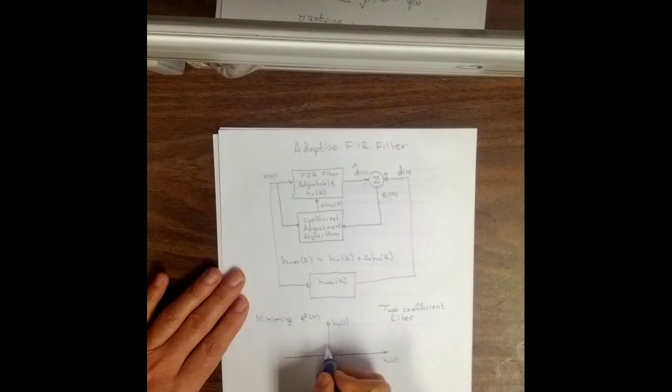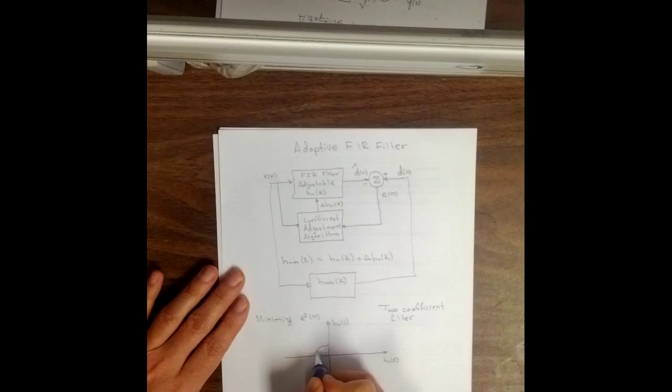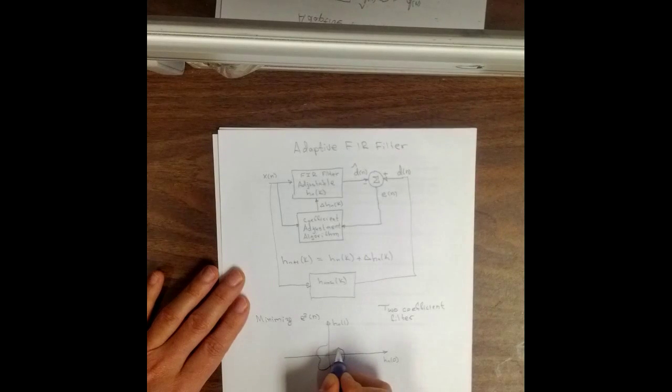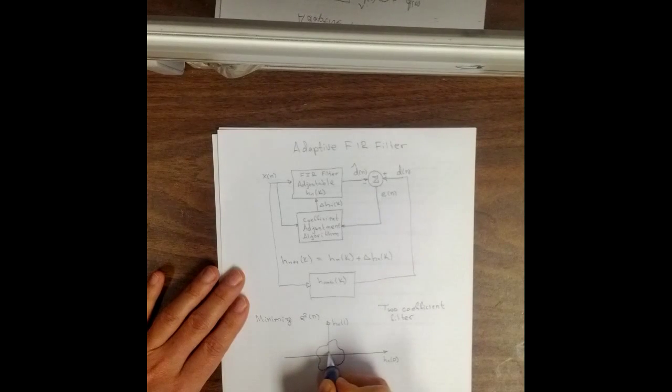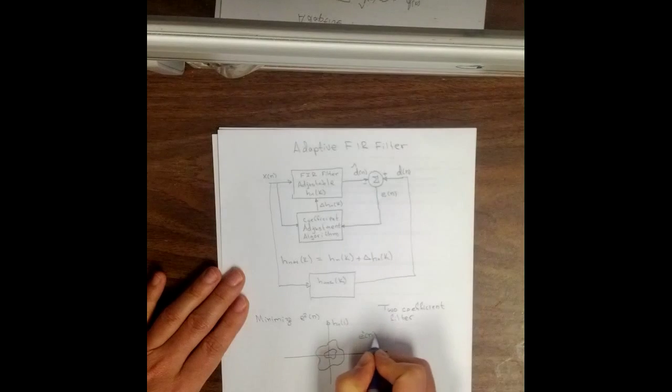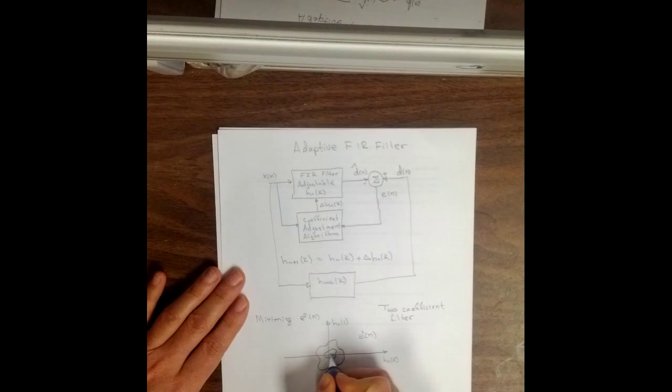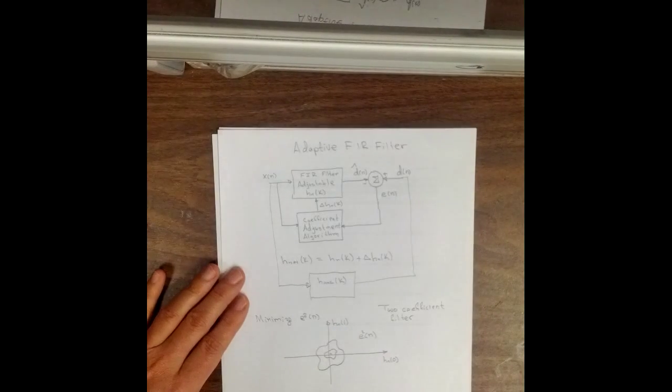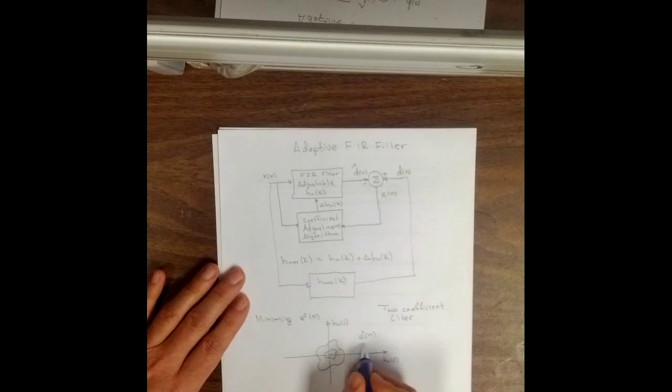So what we'd like to do is if we graph this, we could make a contour plot right here. And these are contours of equal value of e squared of n. And maybe this point right down here might be a hole. In other words, that's a minimum of e squared of n.